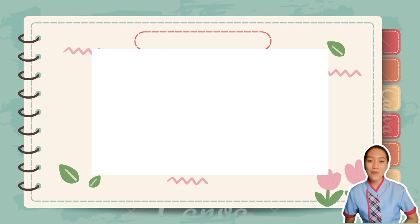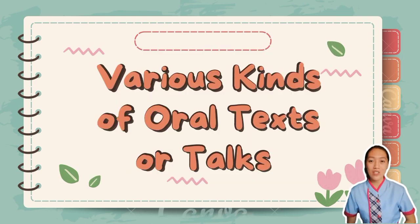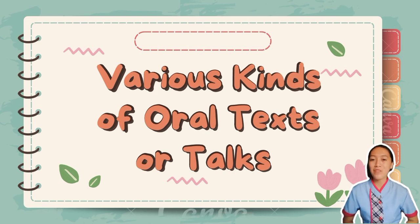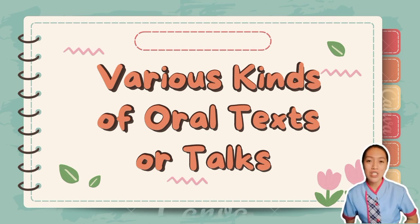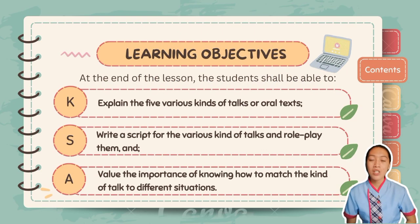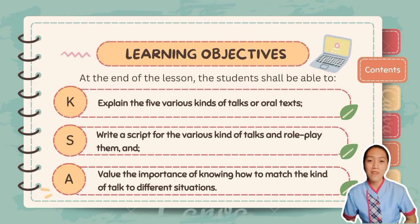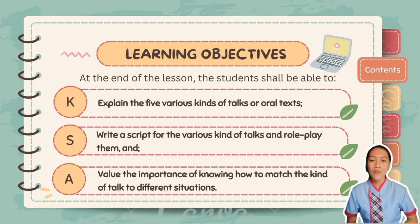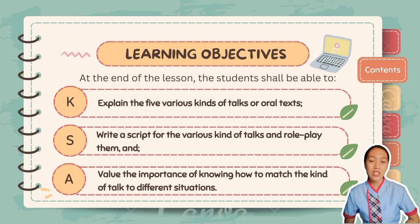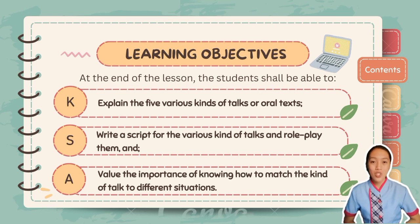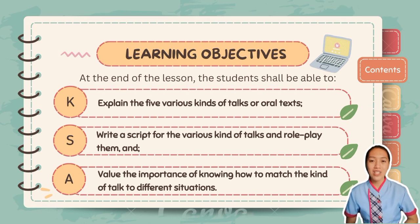Our lesson for today is all about the various kinds of oral texts, or what we call talks. Before we dive deeper into this, let us first know our learning objectives. At the end of the lesson, you will be able to explain the five various kinds of oral texts, write the script for the various kinds of talks and role-play them, and value the importance of knowing how to match the kind of talk to different situations.